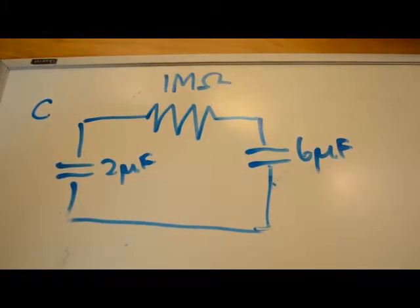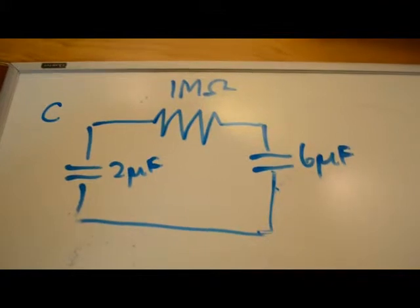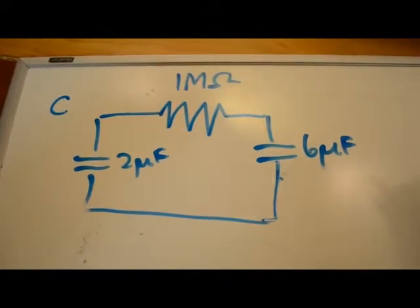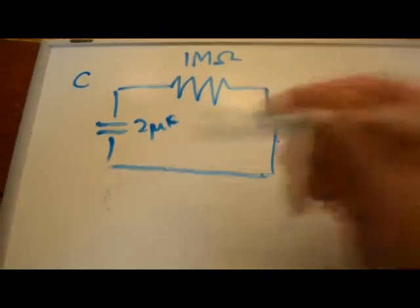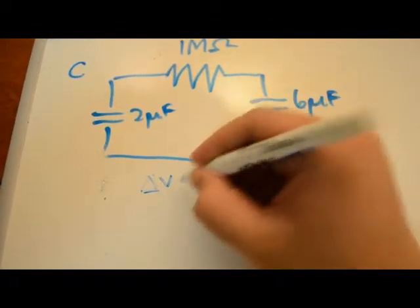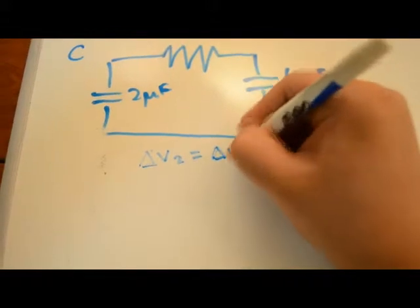For part C, equilibrium is reached after a long period of time. What that means is the 2 capacitors have the same potential across. Delta V2 equals delta V6.